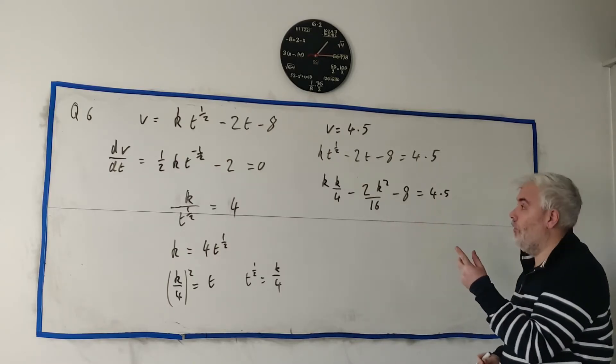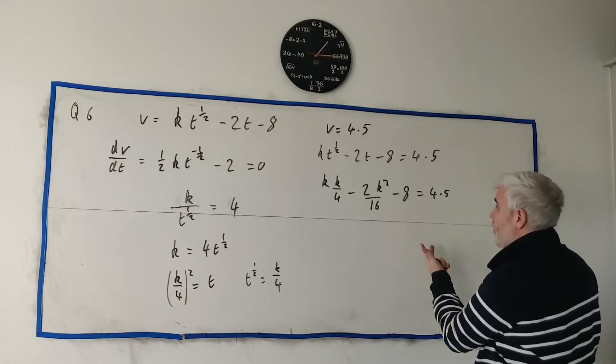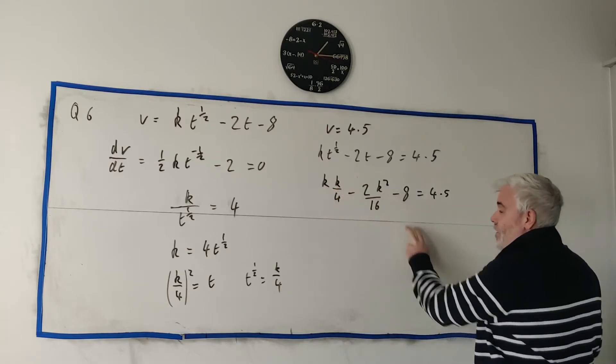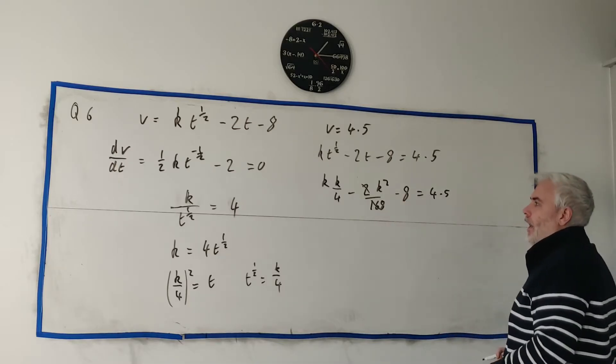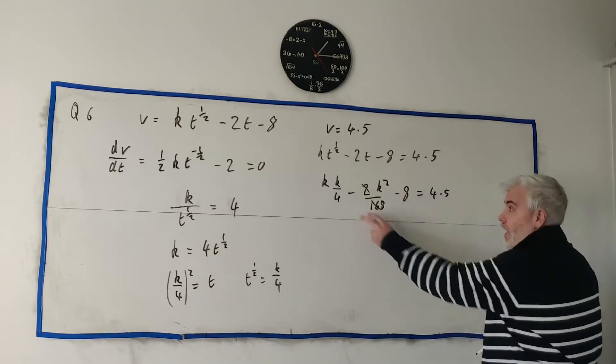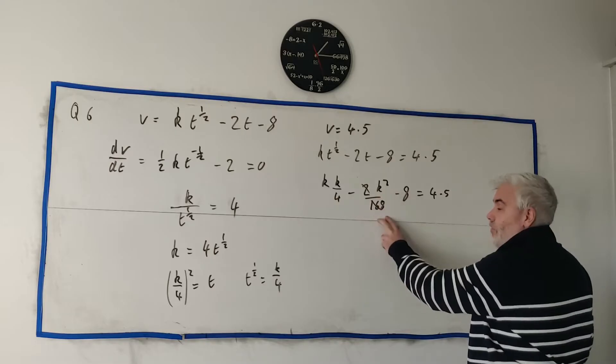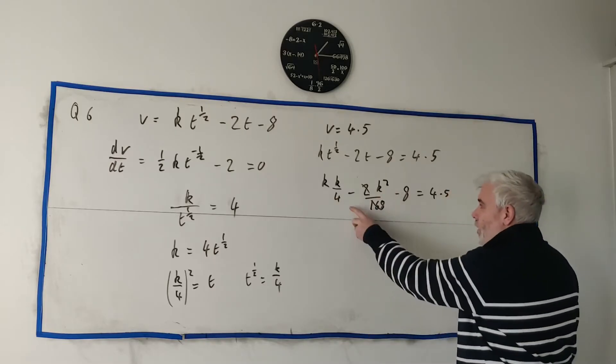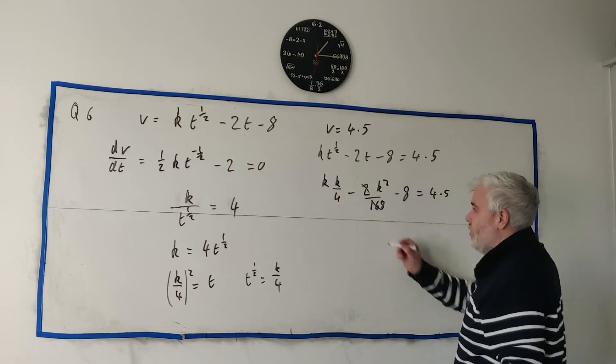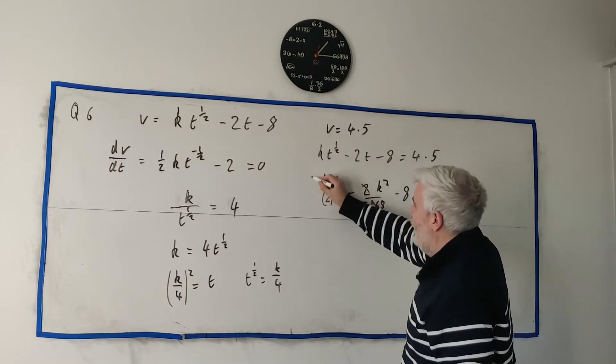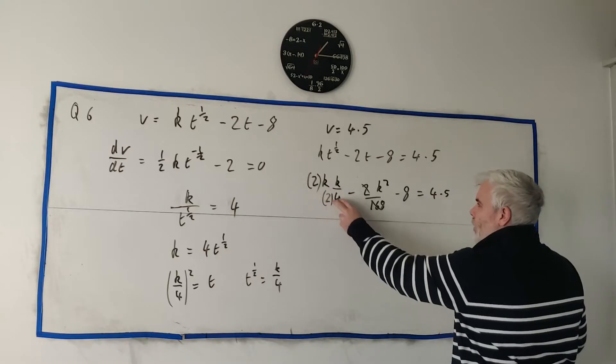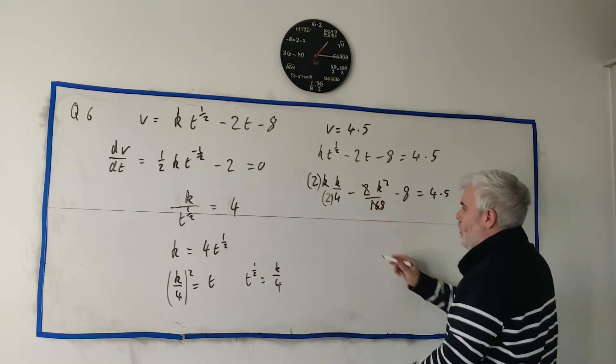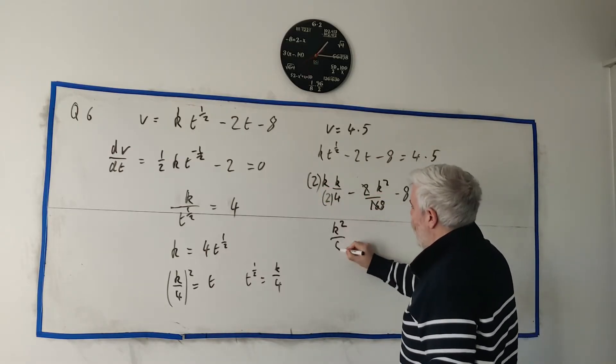And let me write both of them. That's t and t to the half is equal k over 4. Just a step before that one. So if we put that in, we get k multiplied by k over 4 minus 2 times k squared, this is t here, over 16 minus 8 equals 4.5. This is just an equation with one unknown. There's k's. This is k squared. This is k squared. See 2 goes into that 8 times. We just do a bit of algebra. k squared over 4 minus k squared over 8.